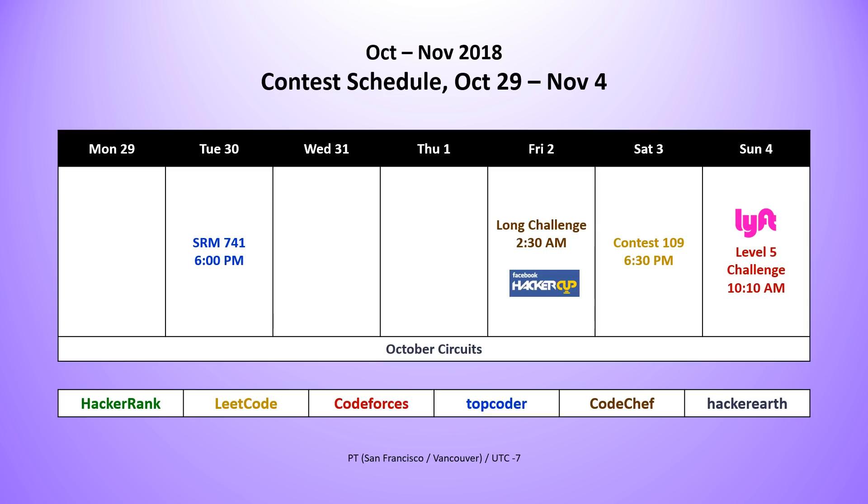Last week started off with the SRM 741 contest from TopCoder on Tuesday. On Friday, we had the start of the CodeChef long challenge, as well as the Facebook Hacker Cup finals. On Saturday, we had from LeetCode the weekly LeetCode contest 109, and then on Sunday morning, we had the finals of the Lyft Level 5 challenge. And throughout the week, we also had from HackerEarth the October Circuits.